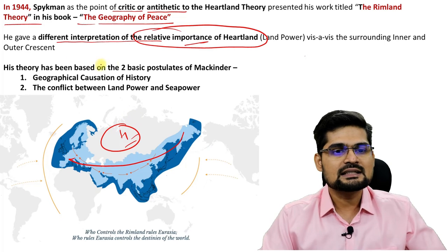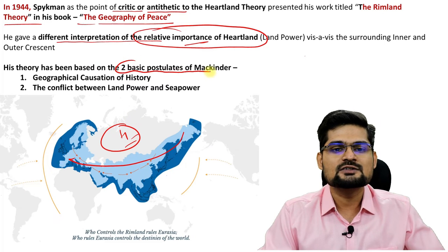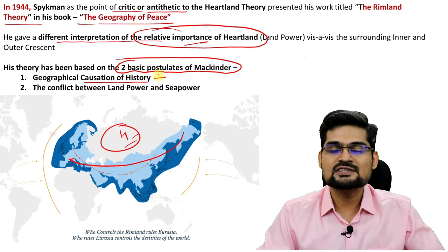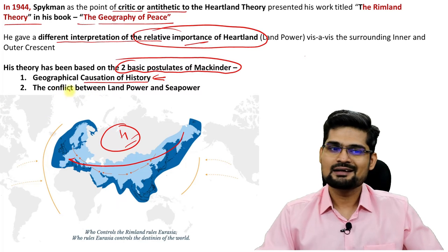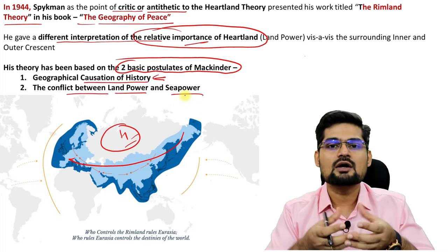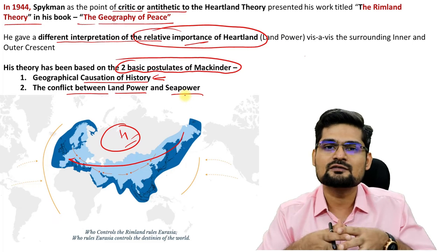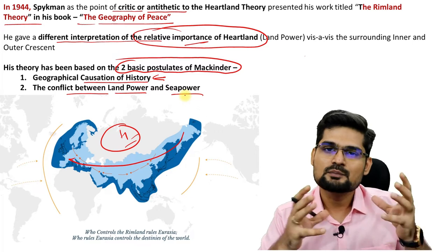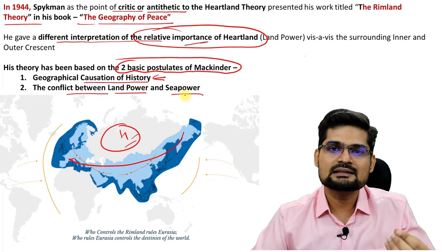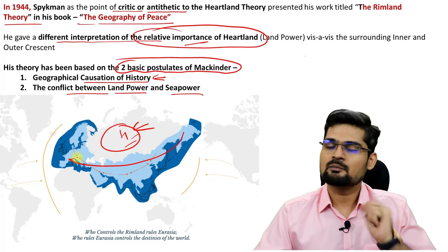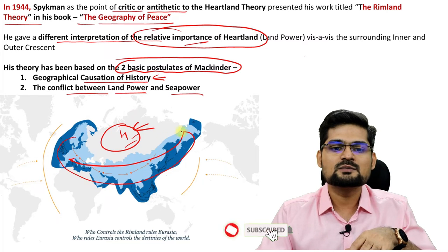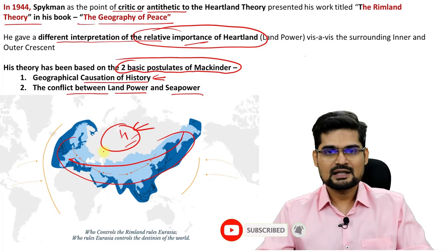His theory is based on two basic postulates or principles from Mackinder: geographical causation of history, and conflict between land power and sea power. These are the building blocks on which both heartland and rimland theories have been built. However, heartland theory talks about the heartland as the pivot area of the world, while Speakman argues for the rimland.